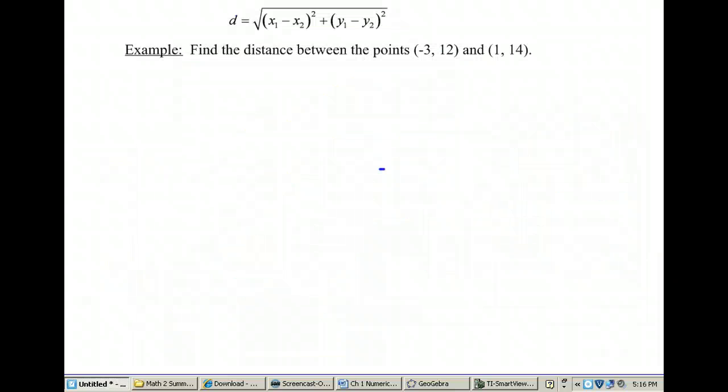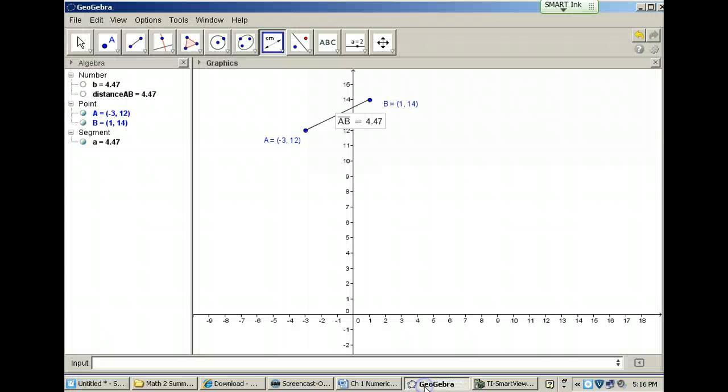Here's an example that we're going to use to find the distance between the points (-3, 12) and (1, 14). And what I've done is gone ahead and graphed this in a software program called GeoGebra. Look, there's a at negative 3 comma 12,